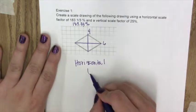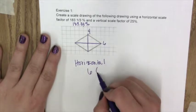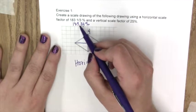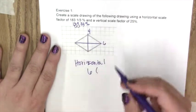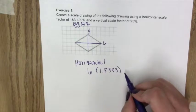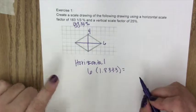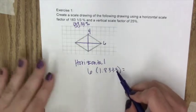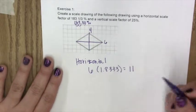So this distance is 6 units and we're going to multiply this by 183.33%. So we need to change this to a decimal so move it over two places, 1.8333. Now when you use the calculator you're going to get 10.9 something something because this is a repeating decimal, so we're going to go ahead and round that up to 11 units.